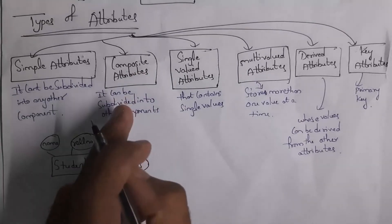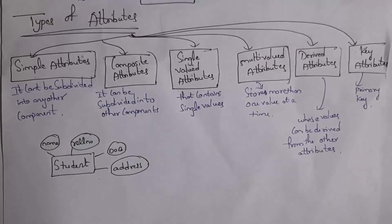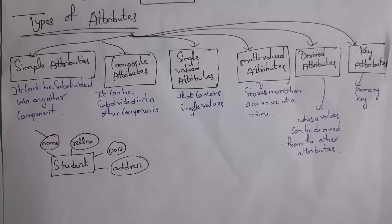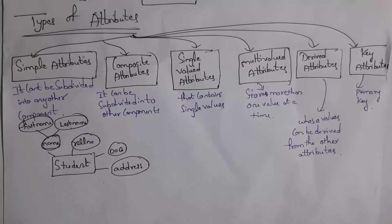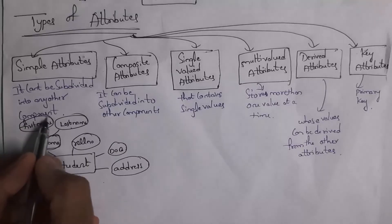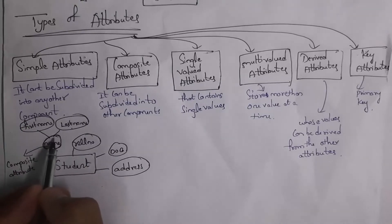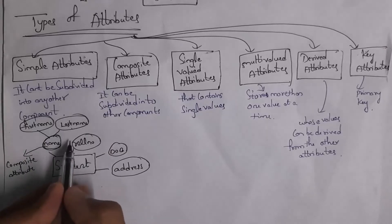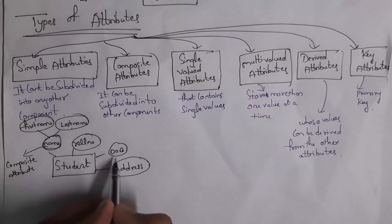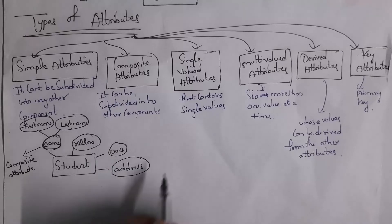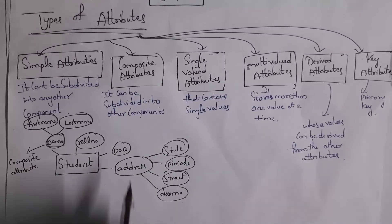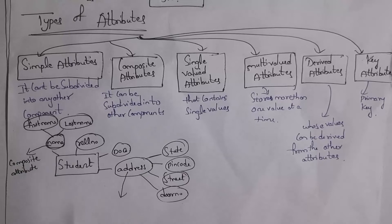Attributes that can be subdivided into another component are known as composite attributes. For example, if you consider the name attribute, I am subdividing it into first name and last name. So the name attribute is a composite attribute. Similarly, address can be subdivided into state, pin code, street and door number — so address is also a composite attribute.